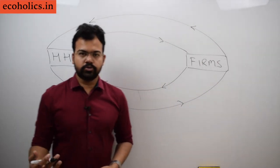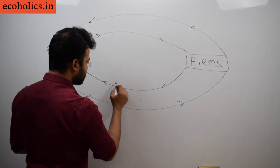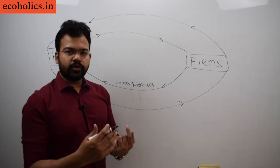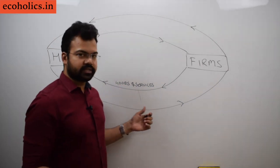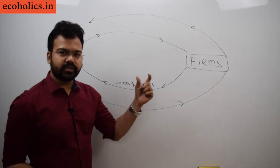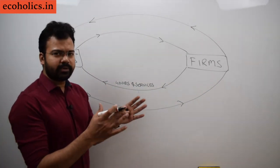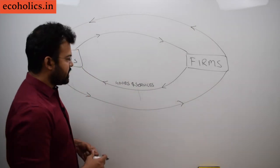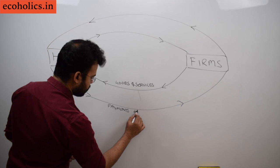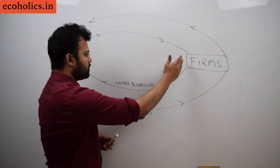What are households getting from firms? In simple terms, they are getting goods and services. Firms provide production and services to households — for example, firms producing mobile phones as goods, and education as services. Households avail these services. In return, what firms are getting from households are the payments for those goods and services.